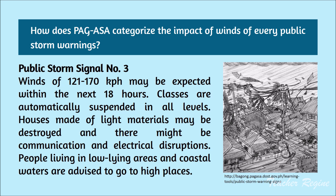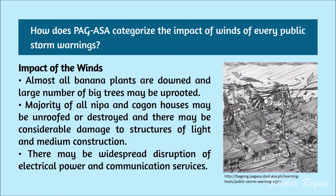Public Storm Signal Number 3: winds of 121 to 170 kilometers per hour may be expected within the next 18 hours. Classes are automatically suspended in all levels. Houses made of light materials may be destroyed and there might be communication and electrical disruptions. People living in low-lying areas and coastal waters are advised to go to higher places. Almost all banana plants are downed and a large number of big trees may be uprooted. Majority of all nipa and kogon houses may be unroofed or destroyed, with considerable damage to structures of light and medium construction. There may be widespread destruction of electrical power and communication services.